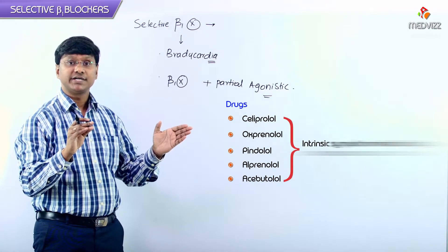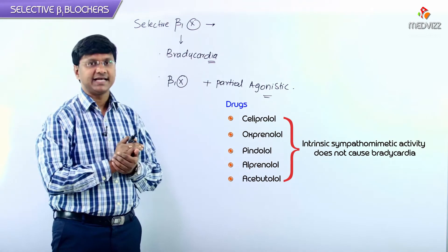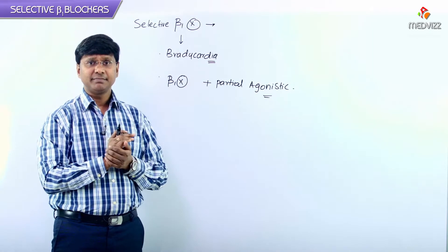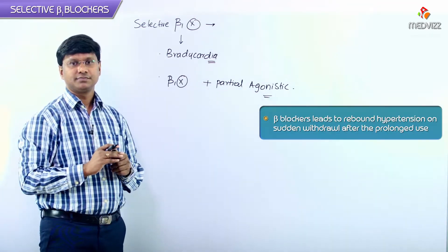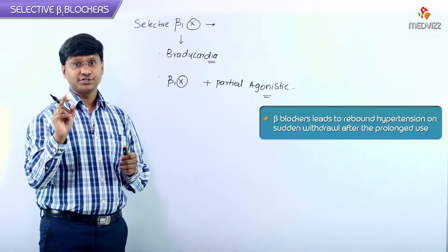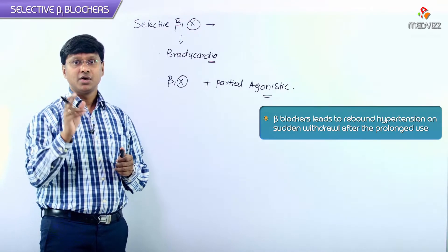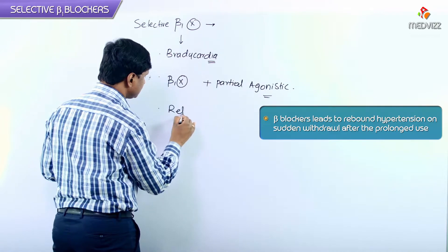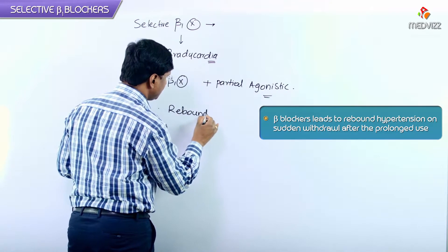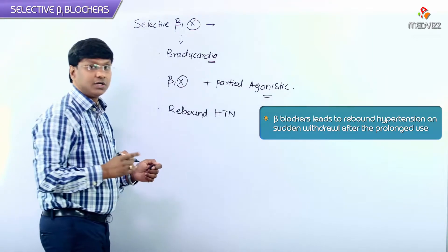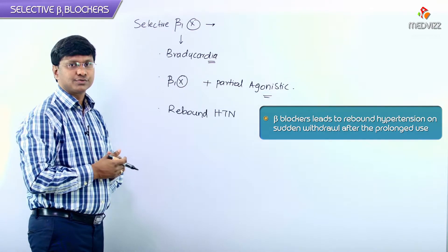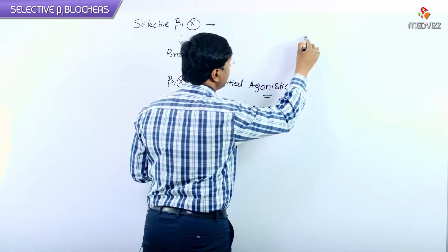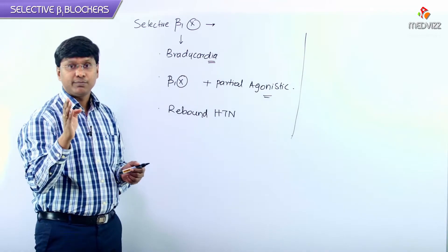These are beta blockers with intrinsic sympathomimetic activity (ISA). They will not cause bradycardia. But remember, all beta blockers can lead to rebound hypertension on sudden withdrawal after prolonged use.